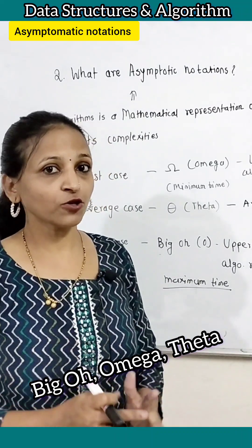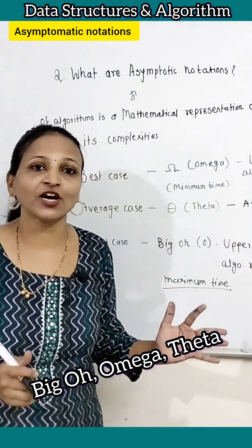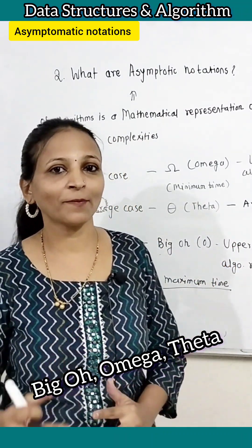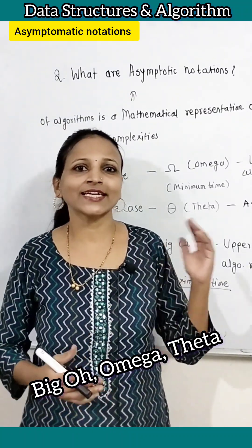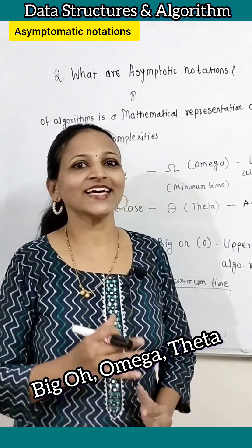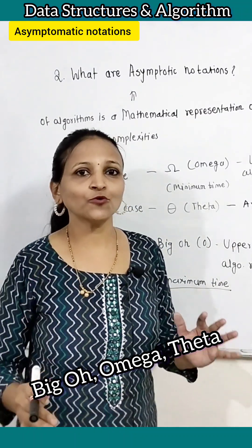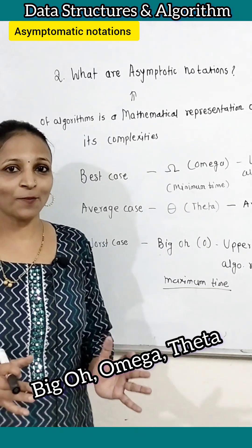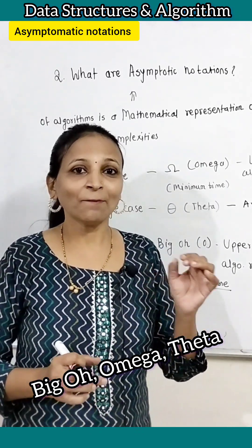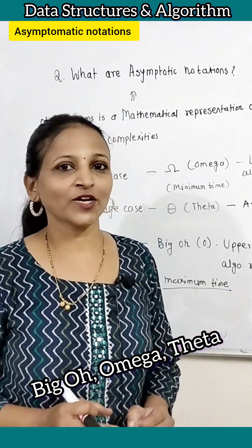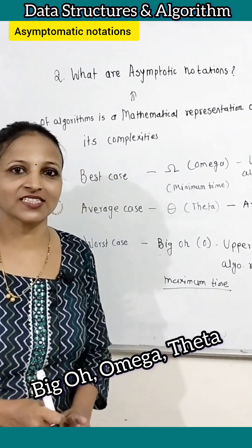Asymptotic notation is a mathematical representation of algorithm's complexity. There are two types of complexities: time complexity and space complexity. To represent both complexities, we can use mathematical notations — those are nothing but asymptotic notations.